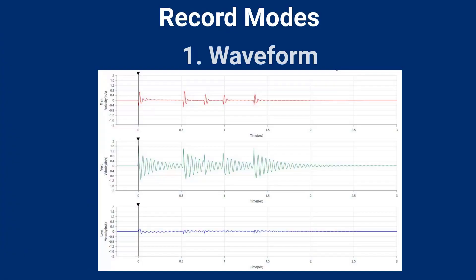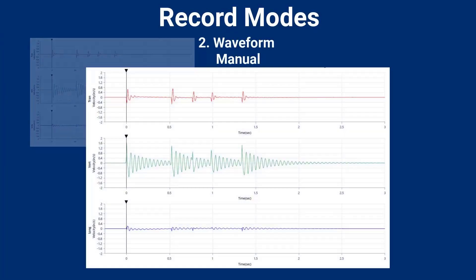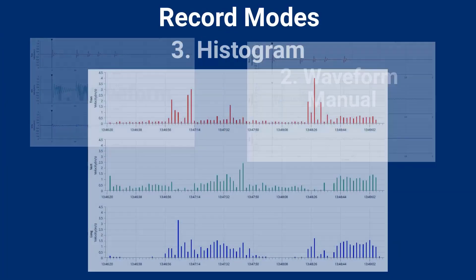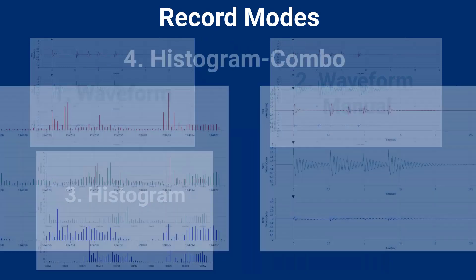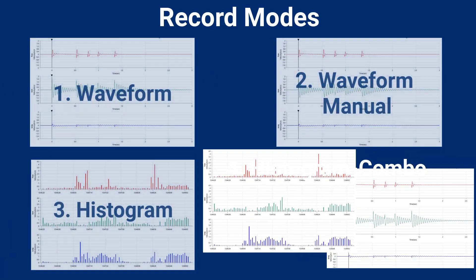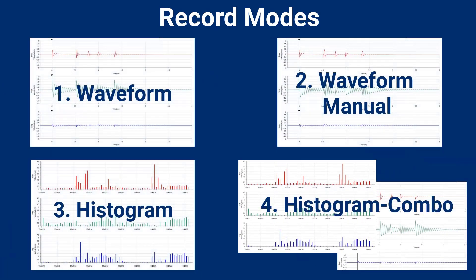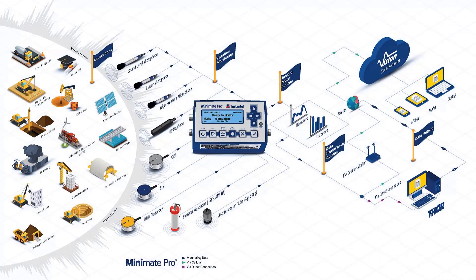Instantel's Micromate and Minimate Pro units offer four record modes for your monitoring needs. This tutorial video will explain the differences between the four record modes and help you choose the best mode for your application.